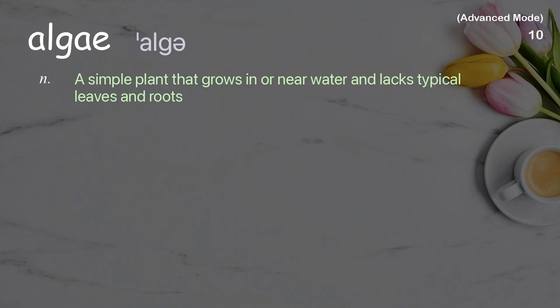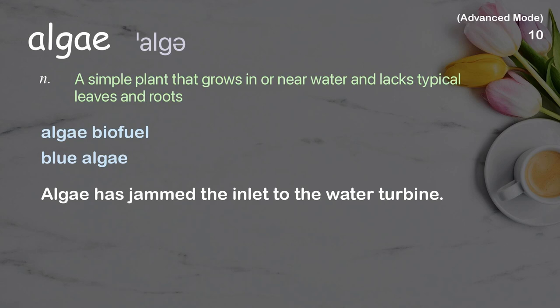Algae: A simple plant that grows in or near water and lacks typical leaves and roots. Examples: Algae biofuel. Blue algae. Algae has jammed the inlet to the water turbine.